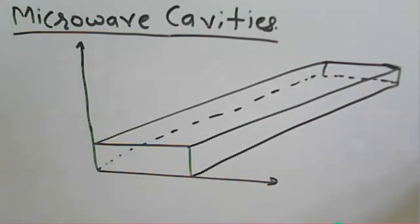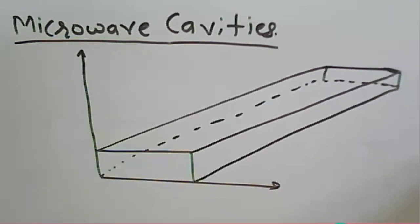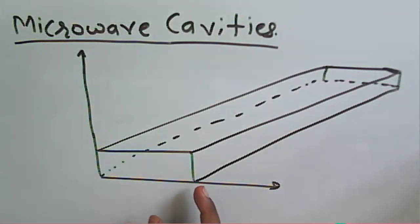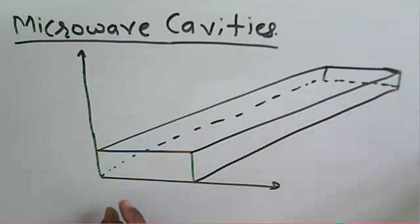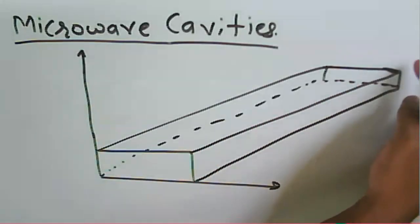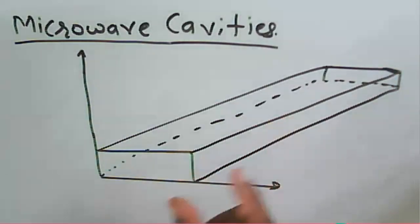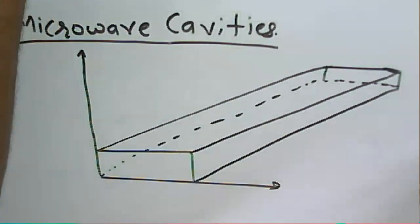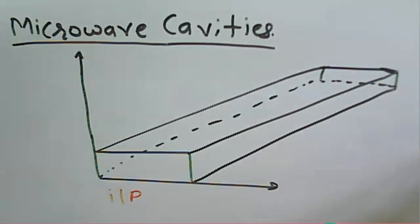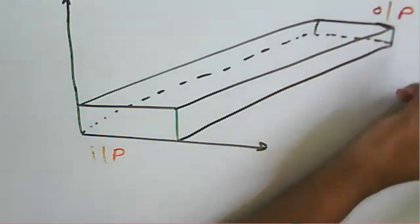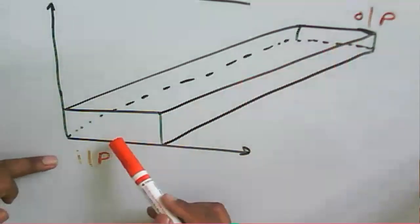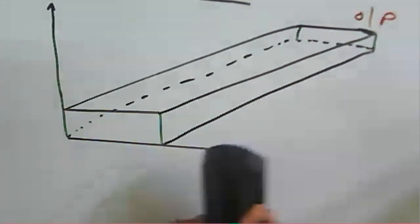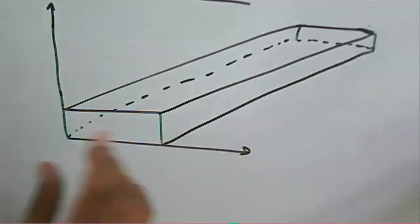Welcome to the microwave communication course. Today we will learn about a rectangular cavity. A rectangular waveguide has both ends open — we provide input at one end and take output at the other, acting like a transmission line. But in the case of a cavity, these two ends of the rectangular waveguide are closed.